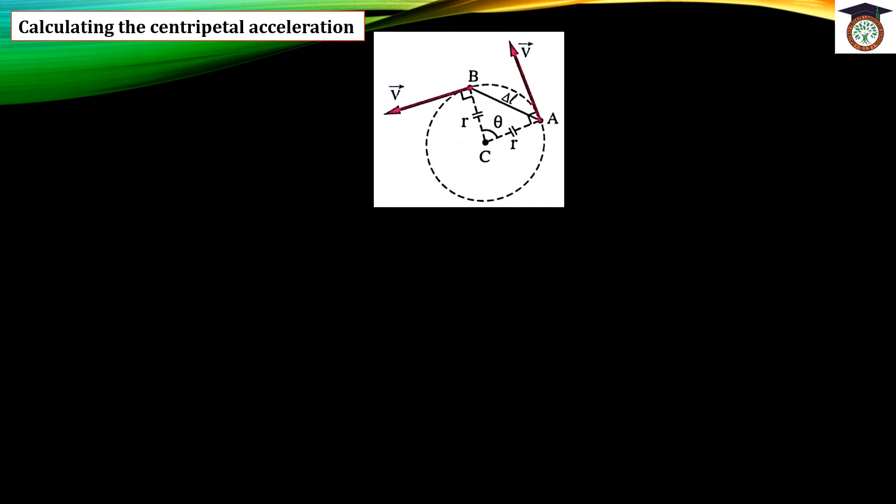Now, how can we calculate centripetal acceleration? When an object moves in a circular path from point A toward point B, with the object moving in a circular path of radius R, the object moves from point A with velocity V in a certain direction. When the object moves from A to B, its direction of velocity changes. If we draw a straight line joining points A and B, we call it delta L.